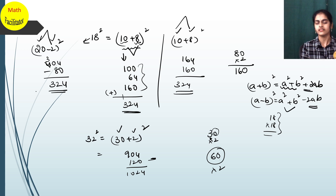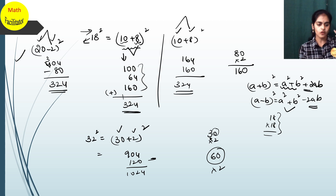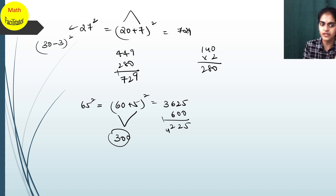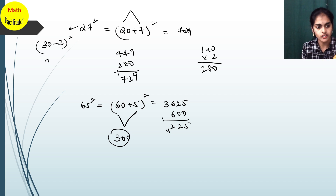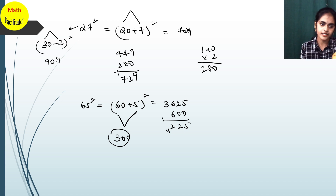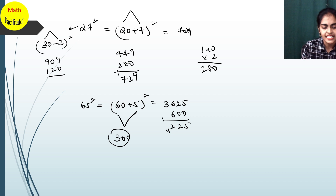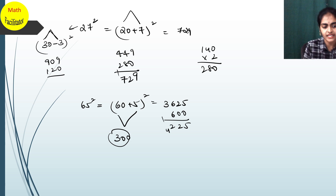For subtraction, some students may face difficulty, which is why I am concentrating only on the (a + b)² method. Numbers closer to tens — for example, 27 can be written as (30 − 3) — you could use (a − b)² here. 30² = 900, 3² = 9, so 900 + 9 = 909.